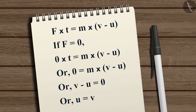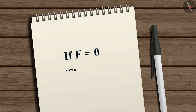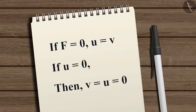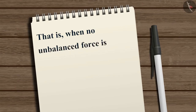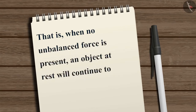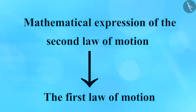From this equation we may observe that when F is equal to zero, initial velocity u is equal to the final velocity v. That is, if no unbalanced force is applied then the object will continue to move with uniform velocity u. Also, if the initial velocity is zero then the final velocity will also be zero — that is, when no unbalanced force is present an object at rest will continue to remain at rest. Hence, we saw how the first law of motion can be mathematically stated from the expression of the second law of motion.